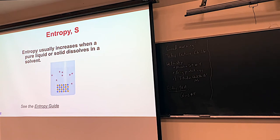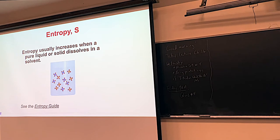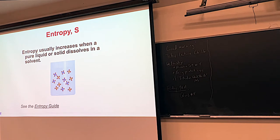When potassium permanganate dissolves, its crystal lattice is broken apart, leading to an increase in disorder and therefore an increase in entropy. Making a solution is generally an entropy-favored process — you will have more entropy upon making a solution than compared to the pure liquid and the pure solute. More often than not, solutions have higher entropy than the pure substances they came from. That makes sense because now you've got all these solutes surrounded by solvents, everything's moving around, you have a lot more chaos. There are some exceptions, so this is the weakest of these trends.